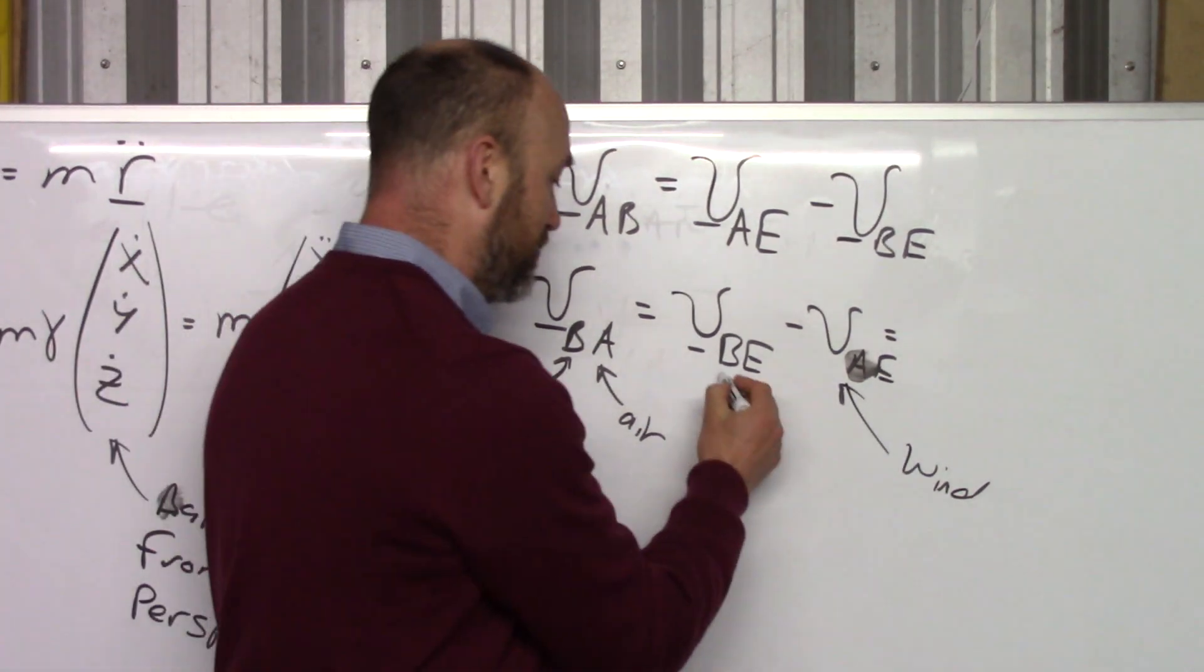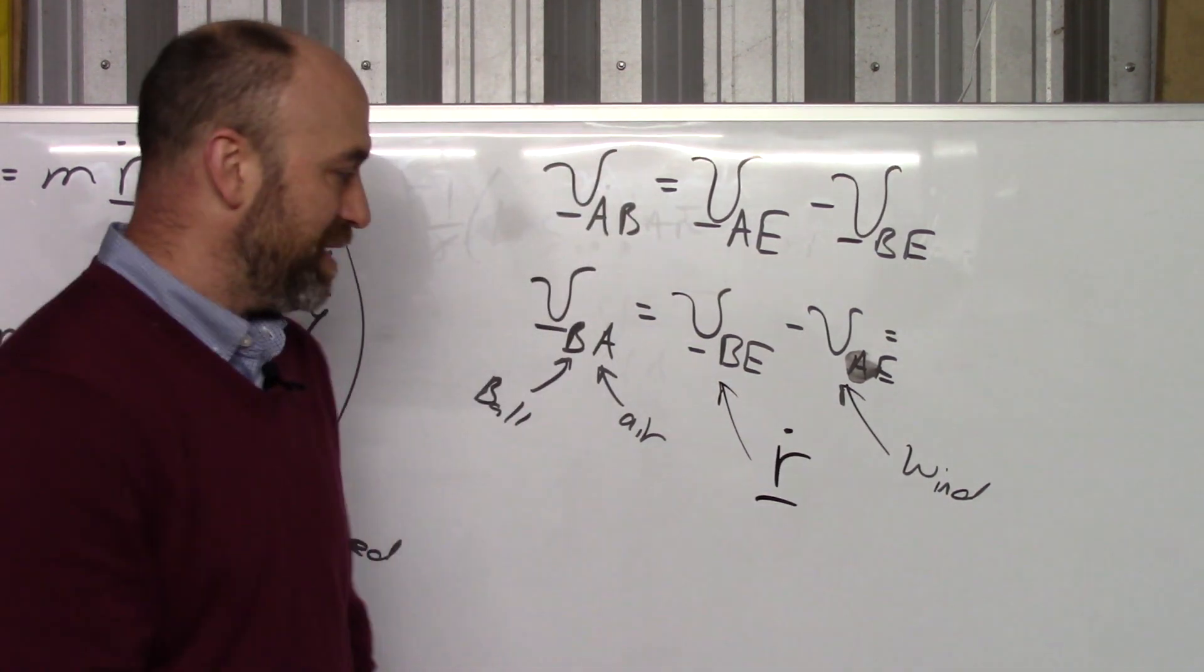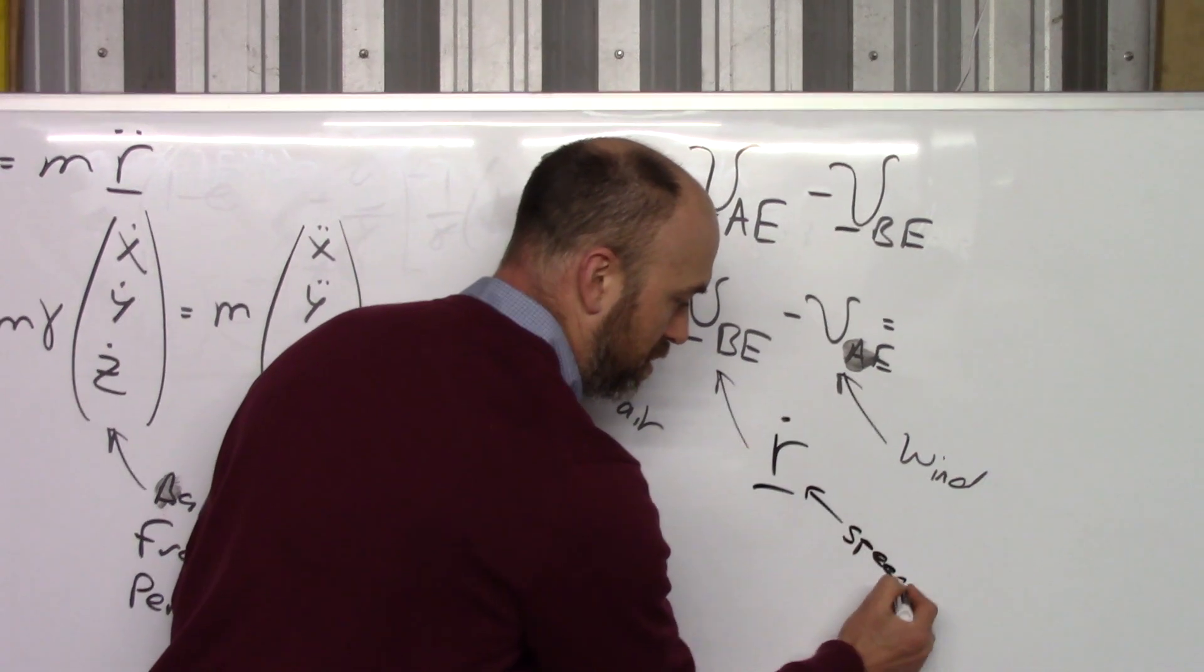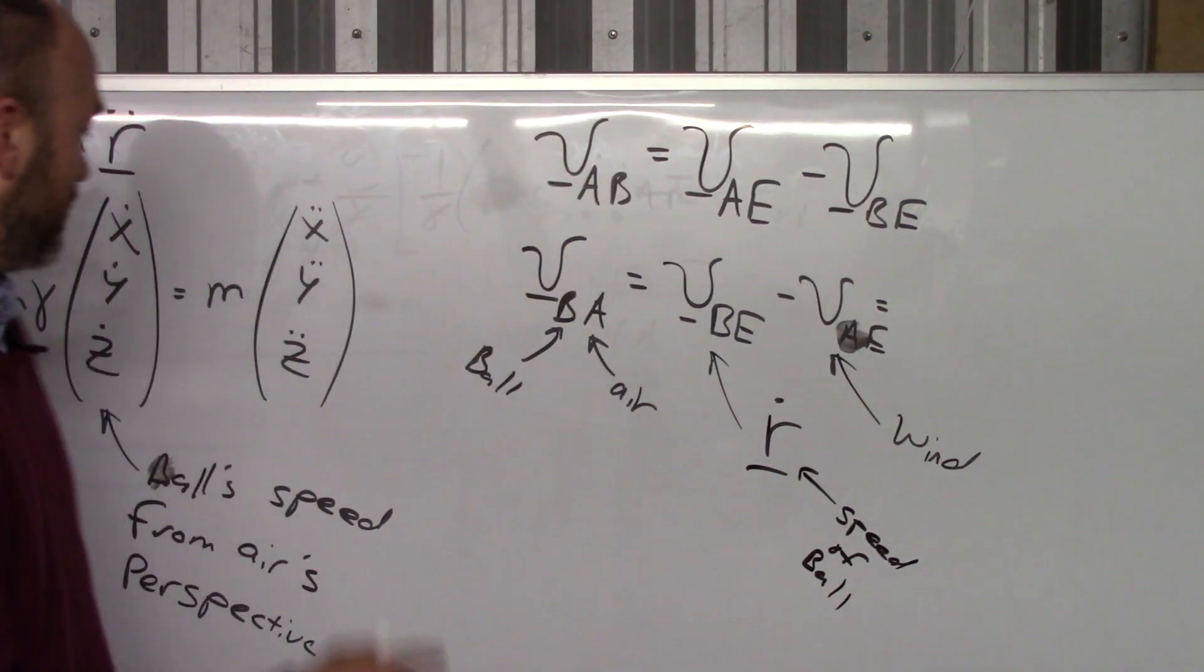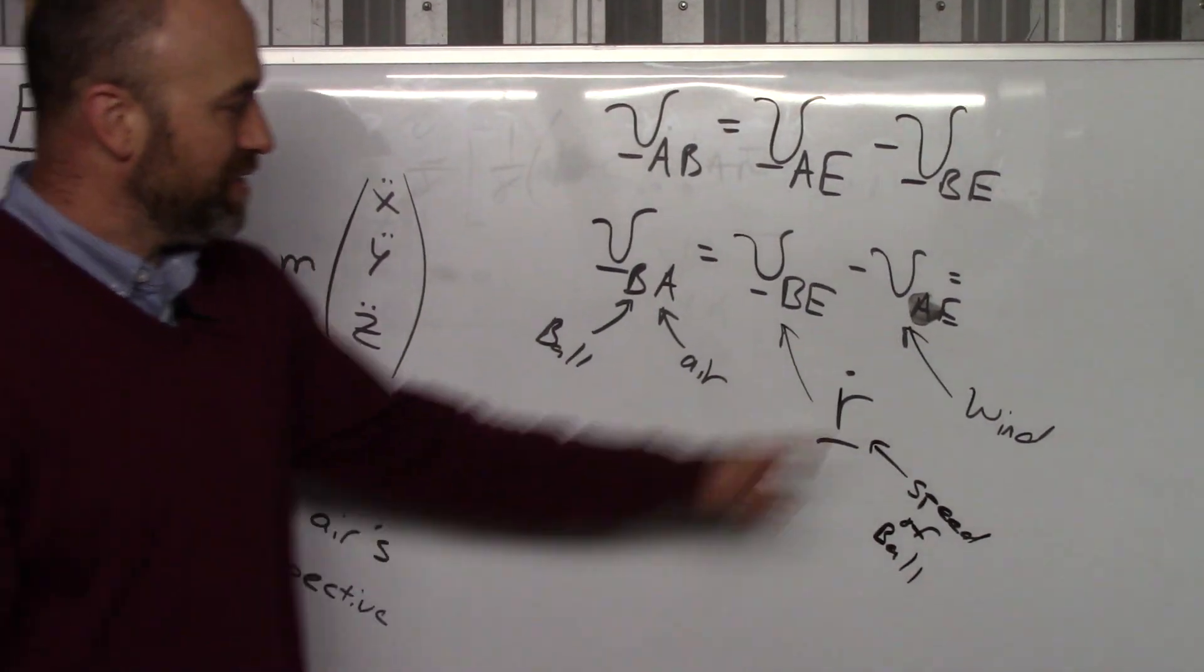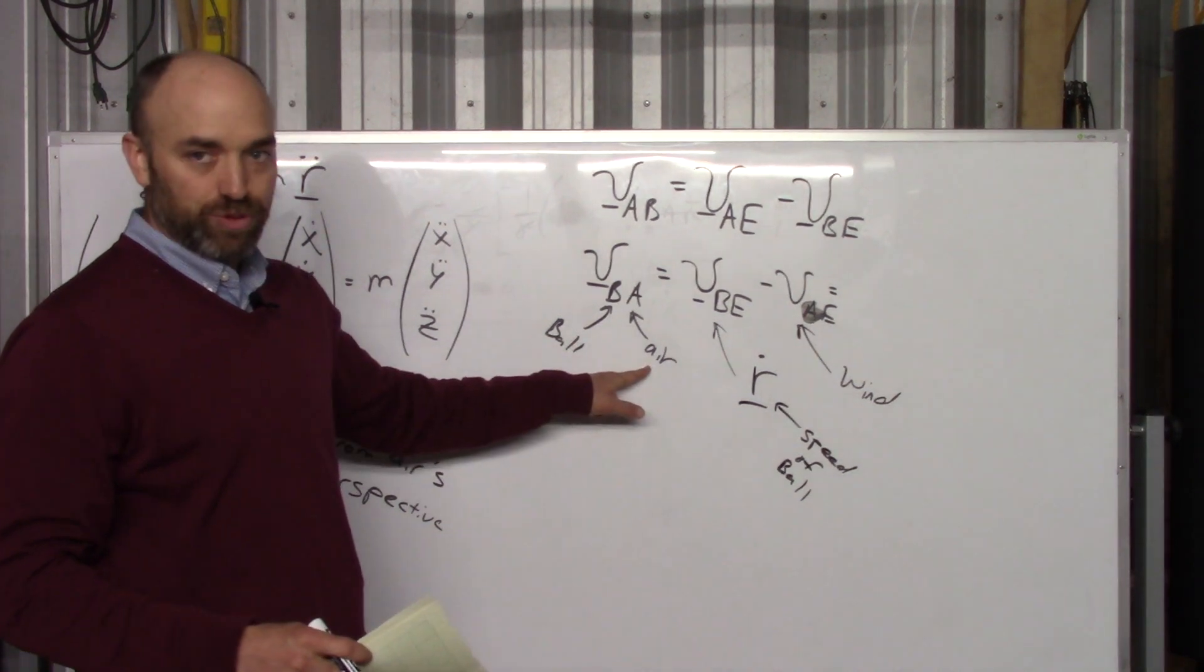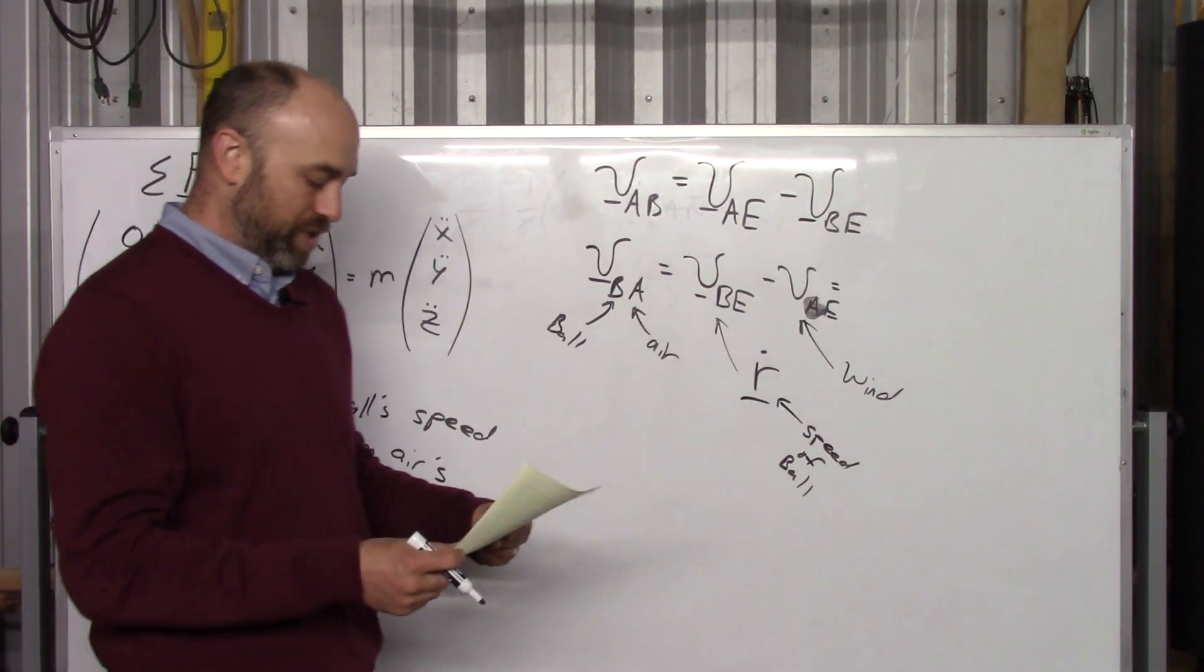And this, that's our R dot. That's the speed of the ball. Which is what we assumed over here. If there is no air speed, then this equals this. The speed of the ball from the air's perspective. As soon as you have wind, you've got to include that in there also.